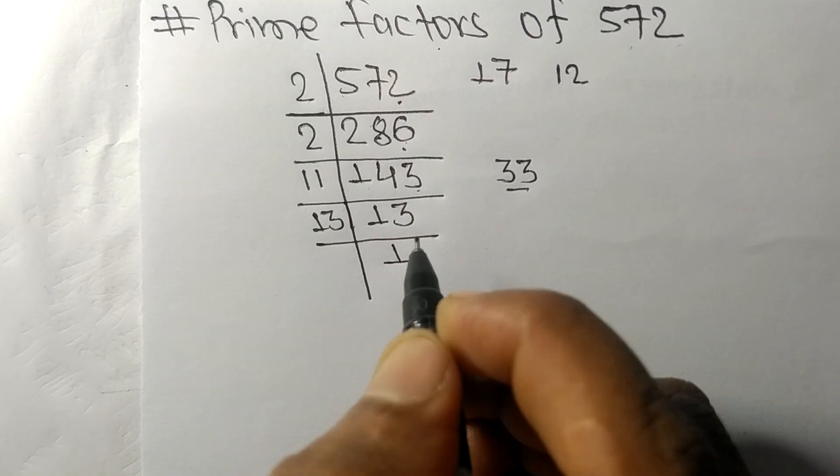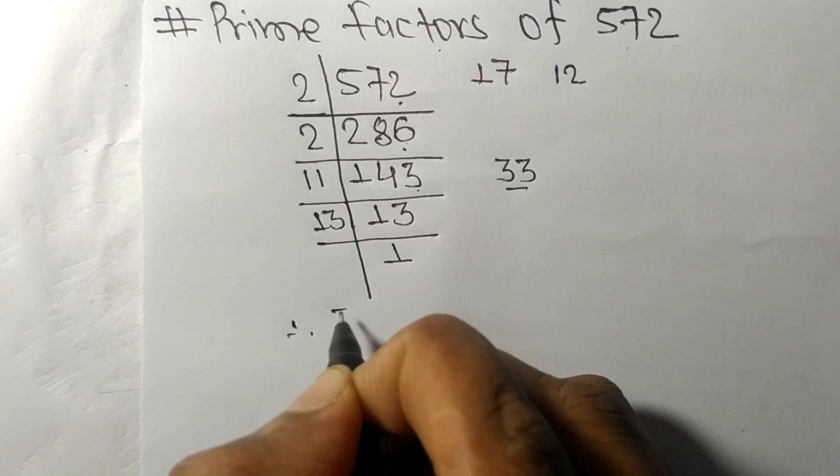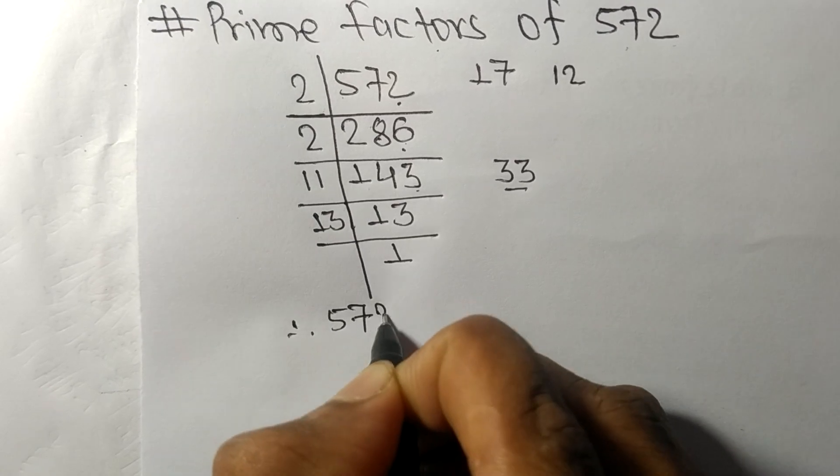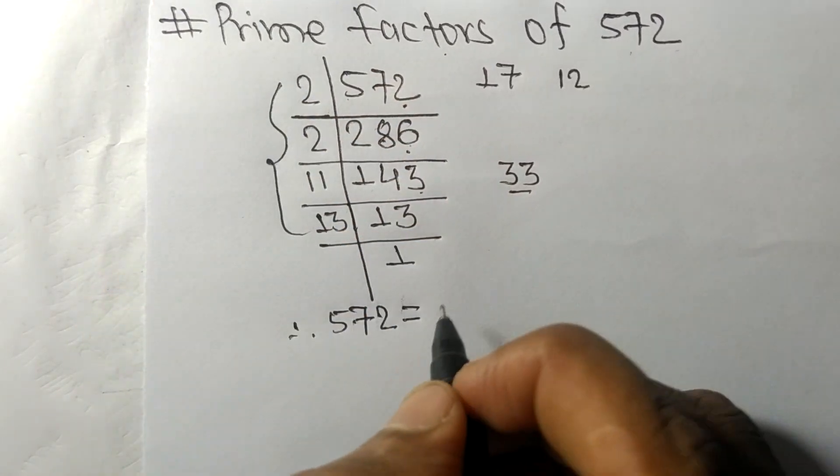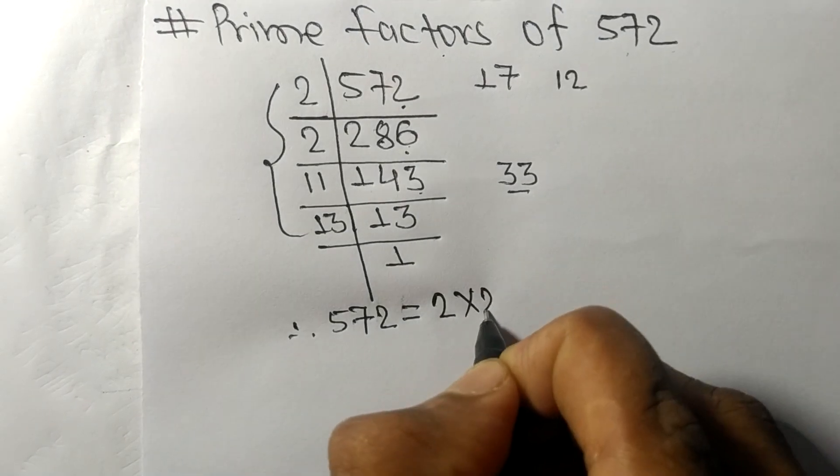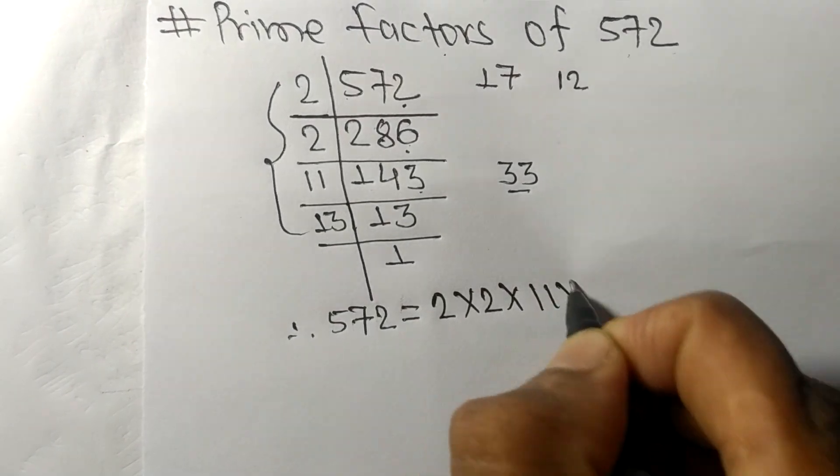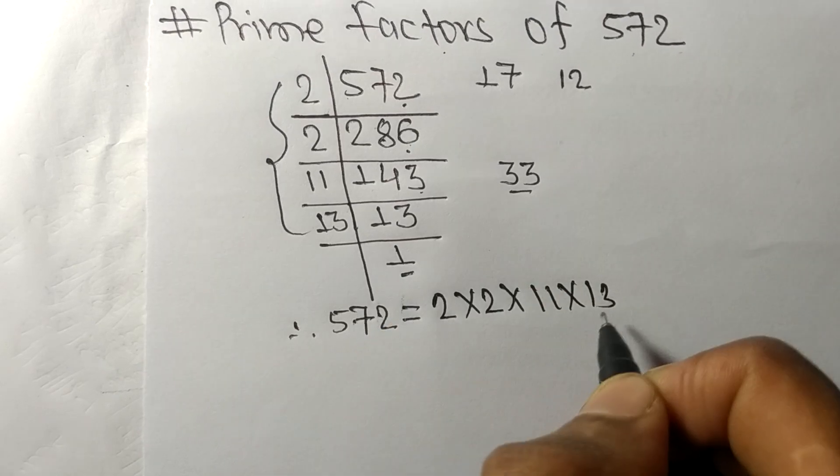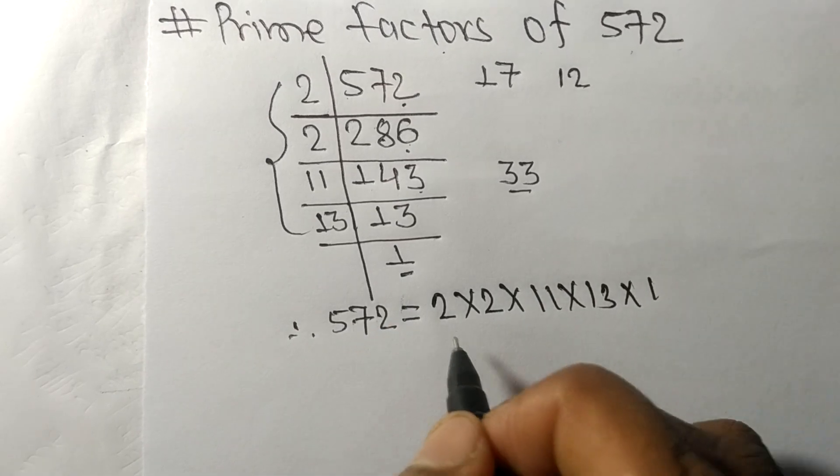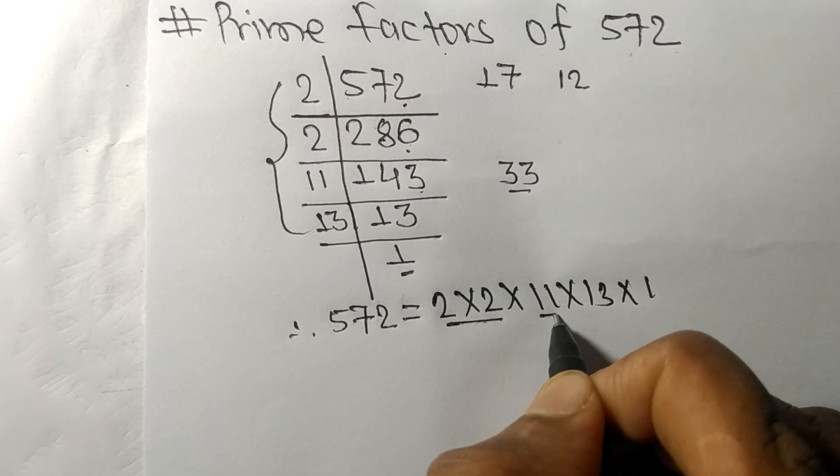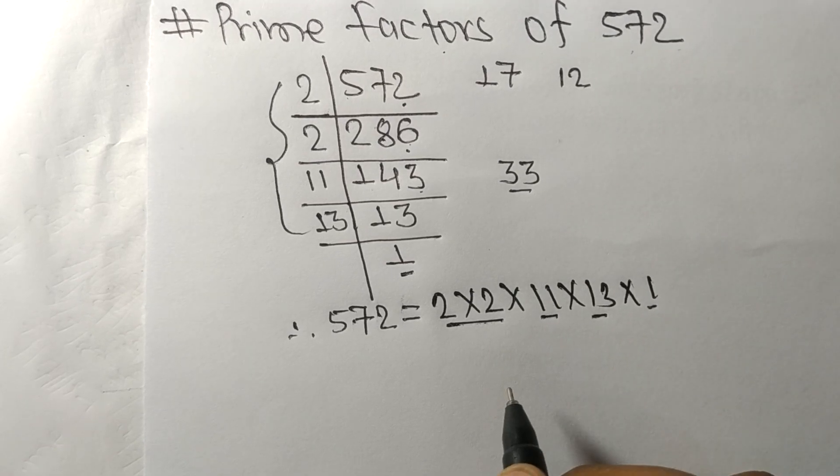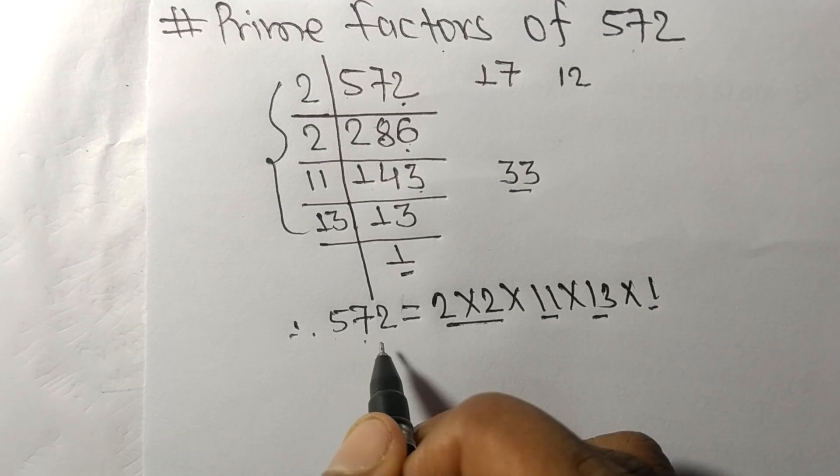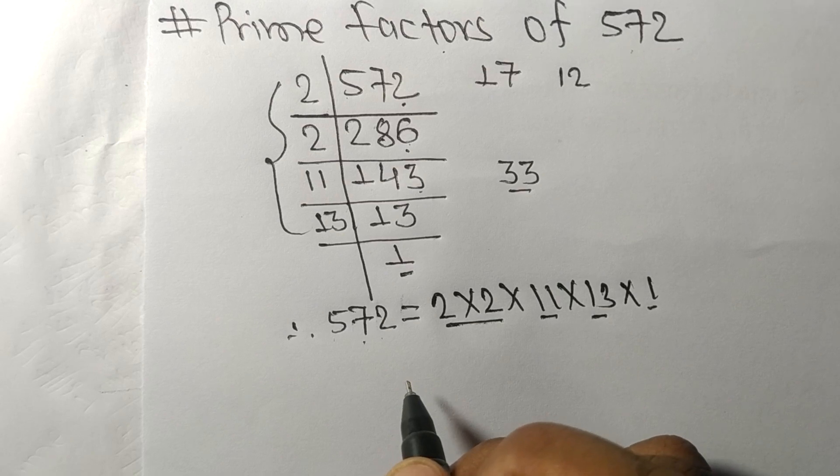Therefore 572 is equal to, from this side it is 2 times 2 times 11 times 13, and from here it is 1. So these 2, 11, 13, and 1 are the prime factors of 572.